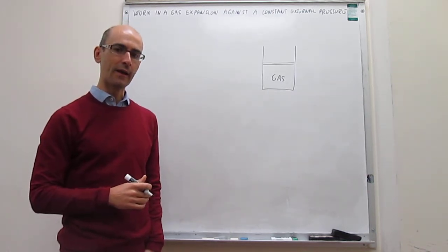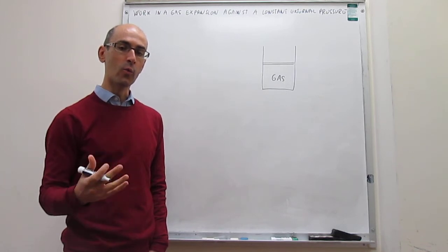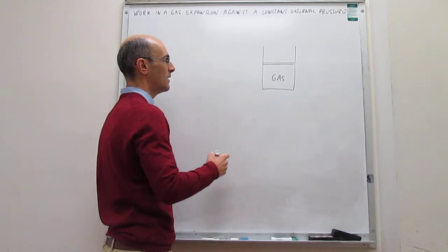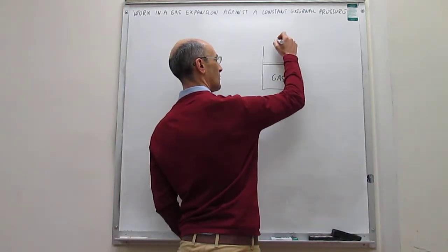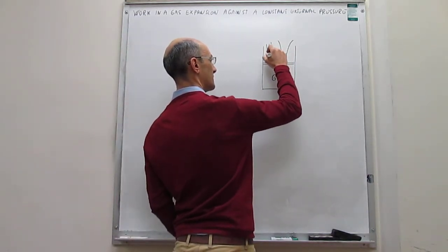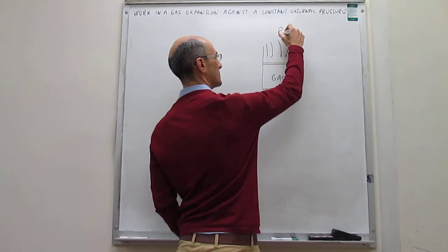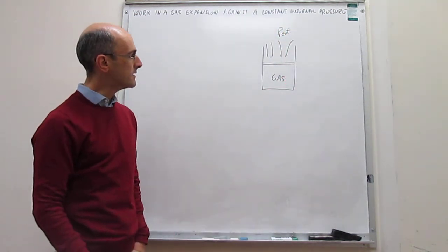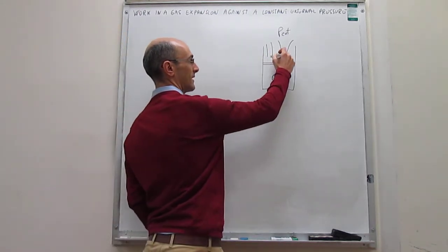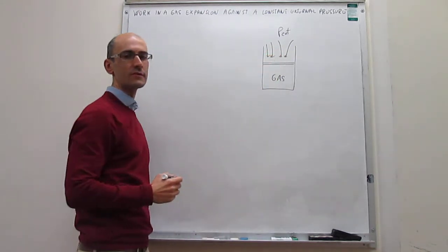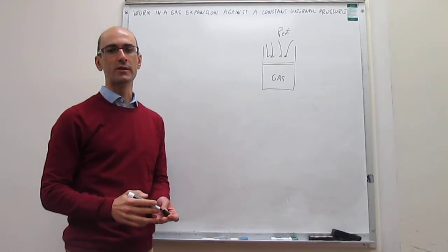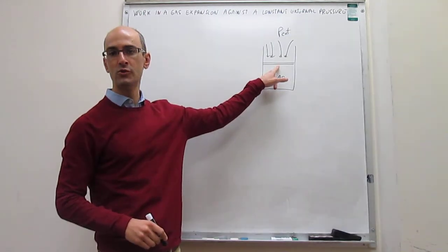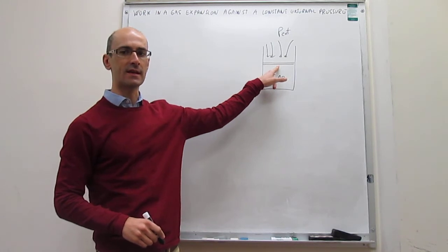We're trying to calculate the work that happens when the piston is moved. To do this, we have to recognize that generally we're going to have what is called an external pressure. That external pressure can be due to various things. For one, the piston may have some sizable mass.